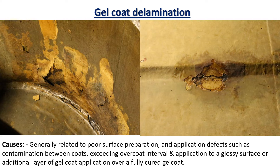Contaminants such as fine dusts, oils, and salt contaminations make the lining layers have poor bonding. The final finish of the gel coat is very smooth and glossy. If we apply an additional layer of gel coat above this layer, that layer of coating will not have good bonding with the existing layer, which leads to delamination of the lining.